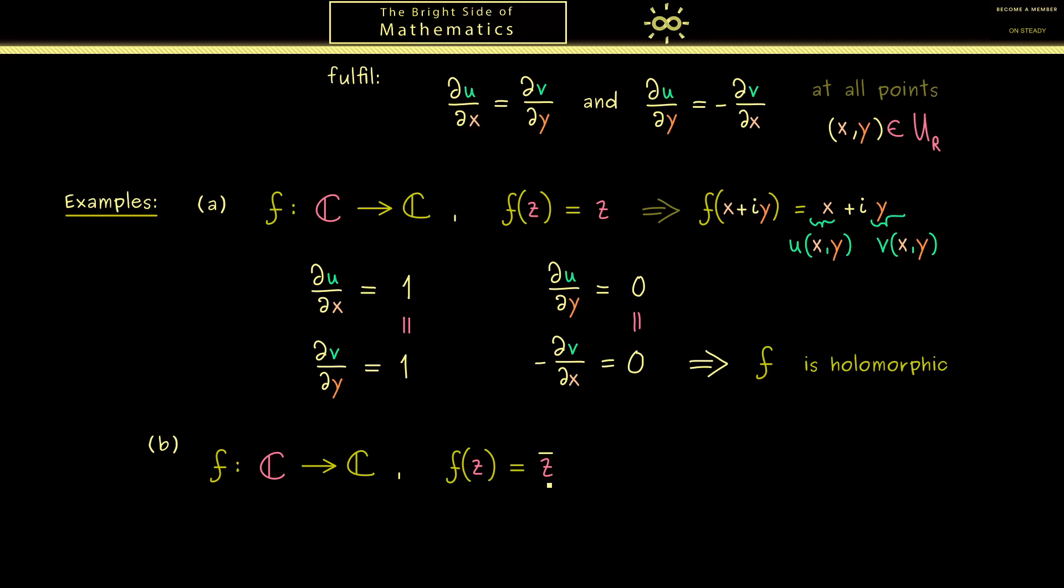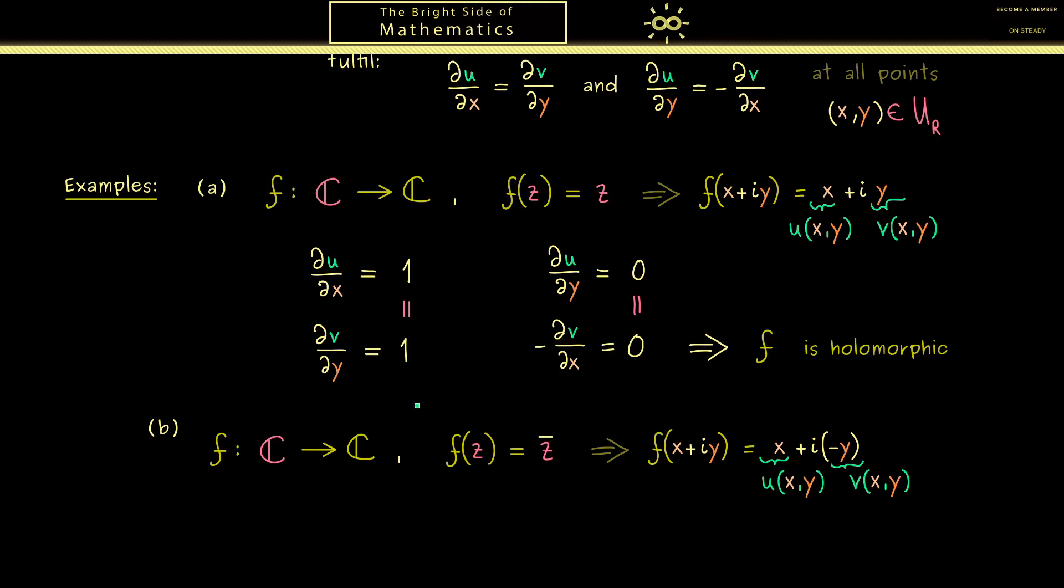Indeed this was simply the complex conjugation. So f is z bar. Now as before in order to apply the Cauchy-Riemann equations we have to rewrite that with x and y. Of course this is not so complicated, the imaginary part just gets a minus sign. And then as before the real part is u and the imaginary part here is v. So you see it's different from before and it will change the first Cauchy-Riemann equation.